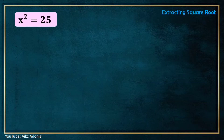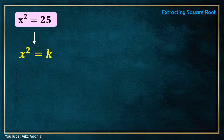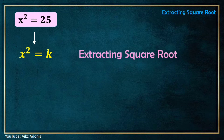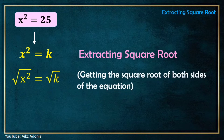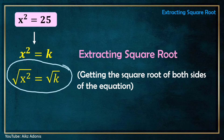Let's have the first example: x² = 25. This equation is in the form x² = k, so we can easily solve this using the first method, which is extracting the square root. When we say extracting the square root, we simply get the square root of both sides of the equation.